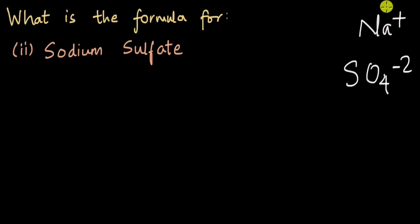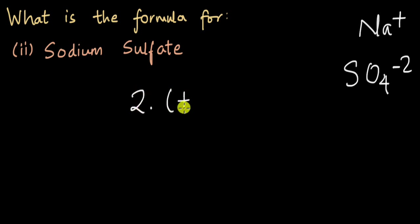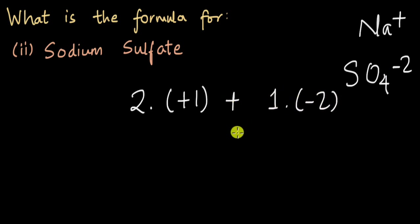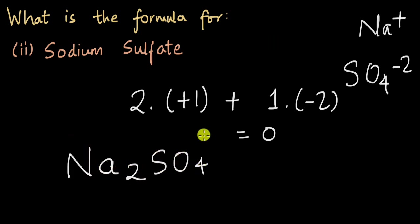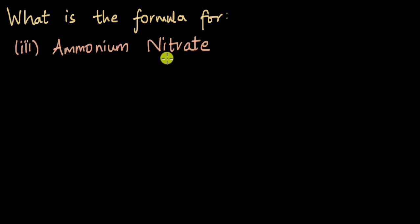Sodium has a charge of plus one and sulfate has minus two. If we take two sodium ions and one sulfate ion, the charge should come out to zero: two cations with plus one charge added to one anion with minus two charge equals zero. So the formula is Na₂SO₄, because we are taking two sodium ions.